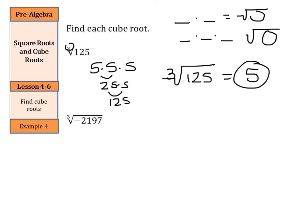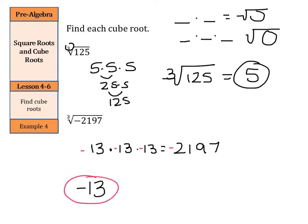With square roots, when we had the negative on the inside, we couldn't do anything with it — there was no real solution. But this is not true with cube roots. We need to ask ourselves what number times itself times itself is 2,197. Using estimation: 10 times 10 times 10 is 1,000, then go to 11 cubed — too small, 12 cubed — too small, but 13 times 13 times 13 equals 2,197. What do we do with the negative? The answer is negative 13, because negative 13 times negative 13 is positive, but multiplied by another negative 13 makes the whole answer negative. So our answer is simply negative 13.